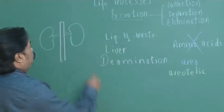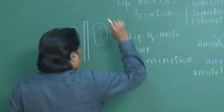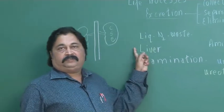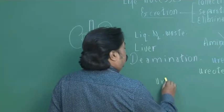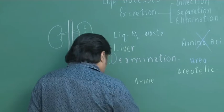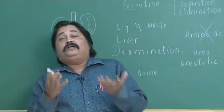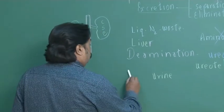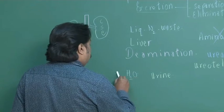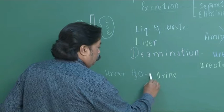What the kidney does? The kidney collects, the kidney separates, the kidney eliminates liquid nitrogenous waste. The kidney forms urine. You know, mammals drink a lot of water. We drink a lot of water. If anybody asks you, why do you drink water? You have to say, because water dissolves urea to form urine.